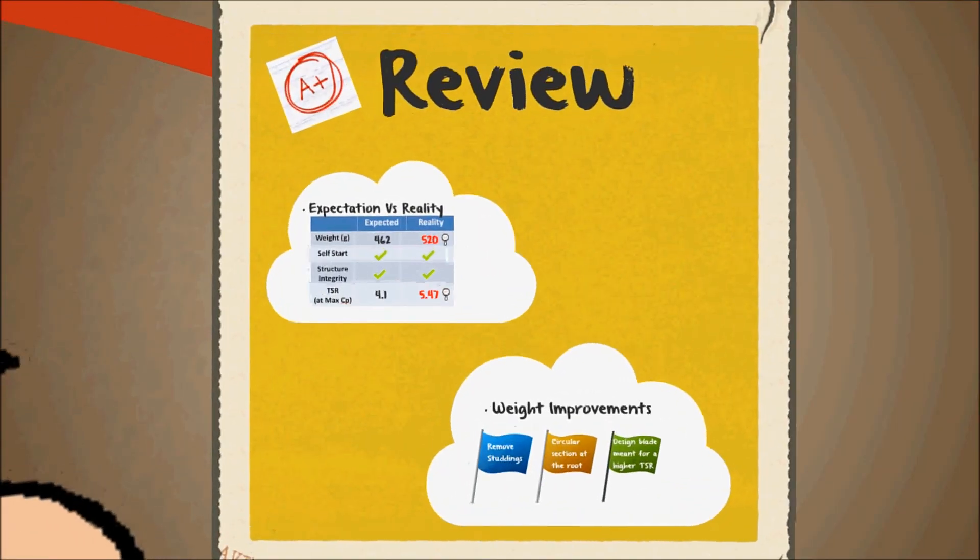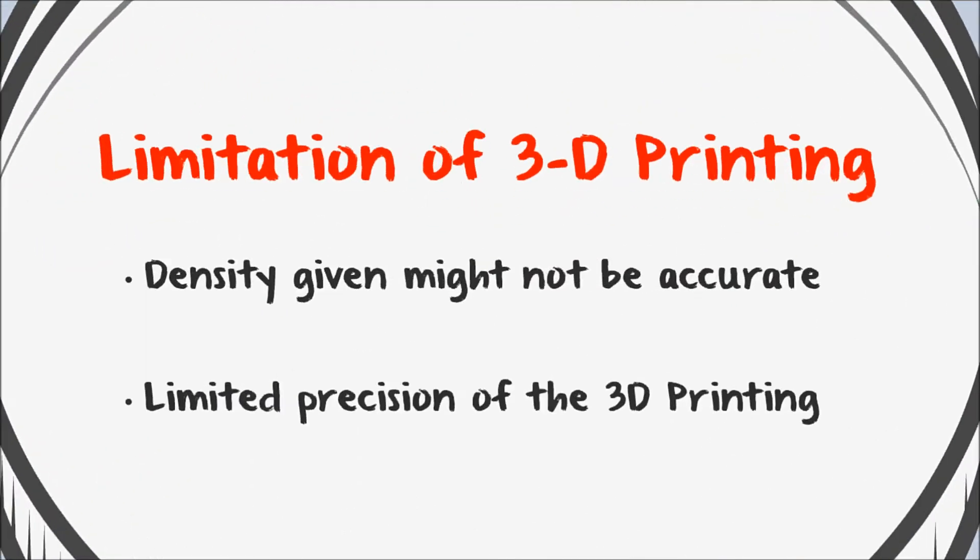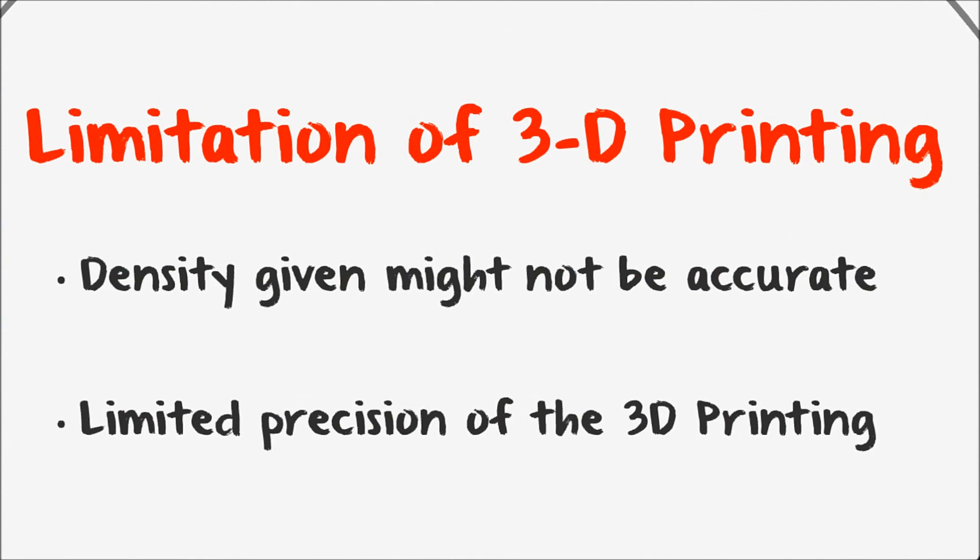Next, we evaluate our design by comparing our expectations with the actual results. There were two main discrepancies which we need to account for. Number one, weight calculated using Creo was significantly lower than actual weight. The density of the ABS plastic given for calculations might be inaccurate, which led to the discrepancy in the actual and theoretical weight. There is also the limitation to the precision of 3D printing. During printing, it is impossible for the printer to reproduce the same movements between layers. This led to uneven roughness on the surface of the prototype made, which contributed to the weight discrepancy.